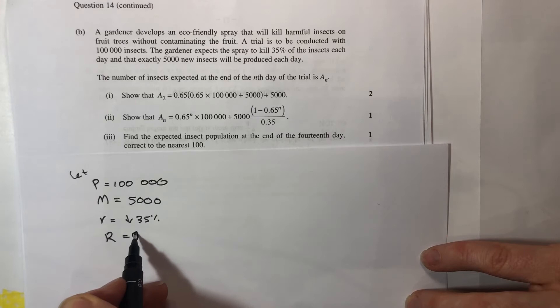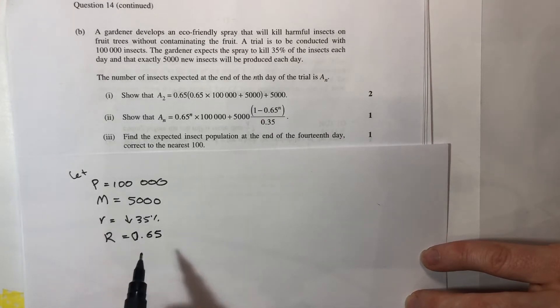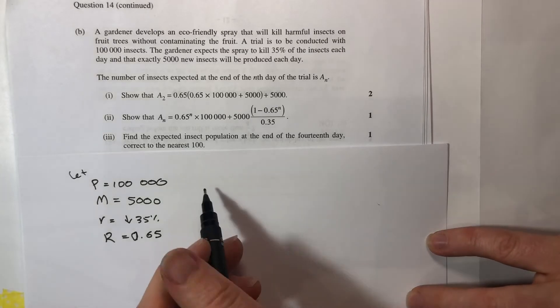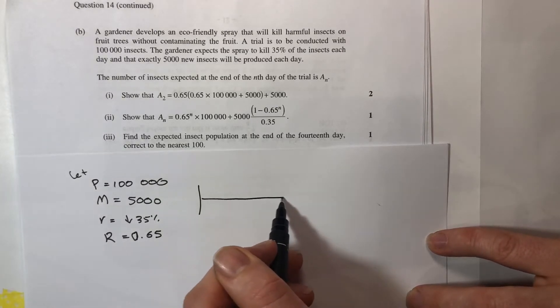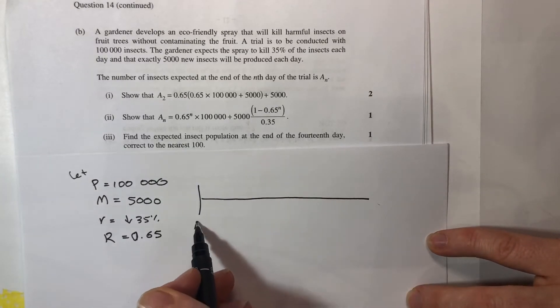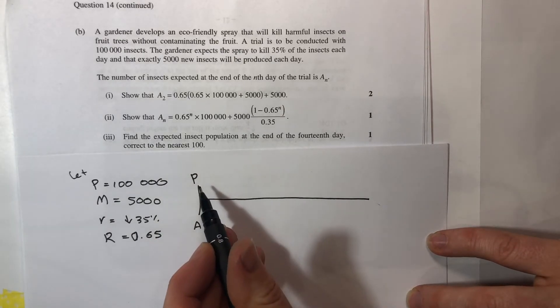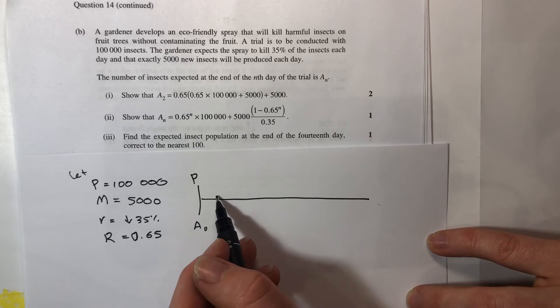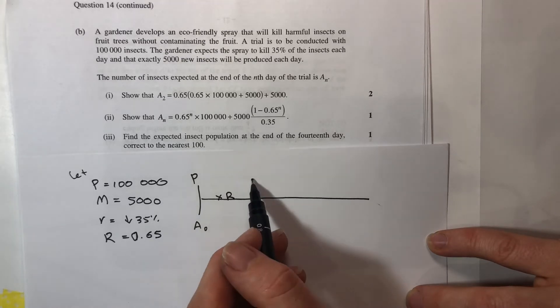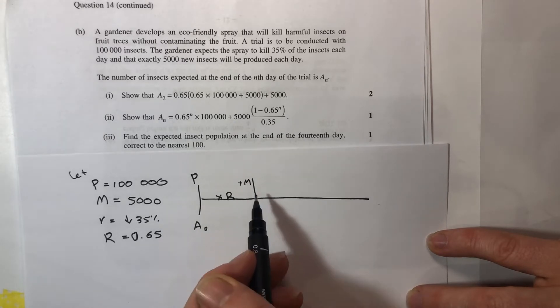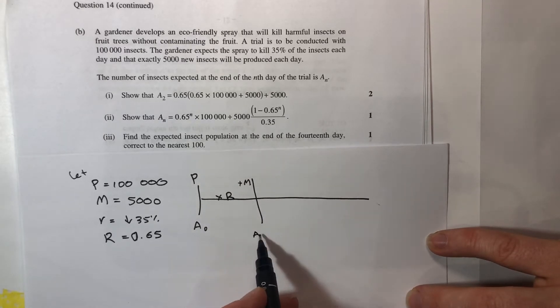If I were to draw myself a little number line, as you know I like to do, then at the beginning I know I have P insects. As time passes, one period time, I'm going to multiply by R to reduce it to 65% of what I have. But then I'm going to add another M in and that's what I have at A1.